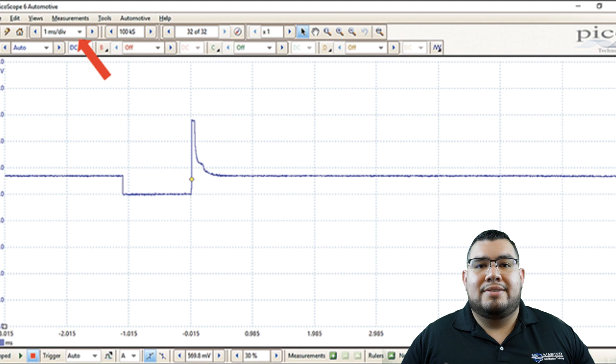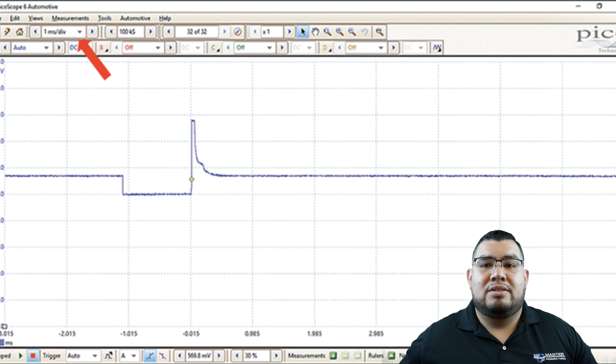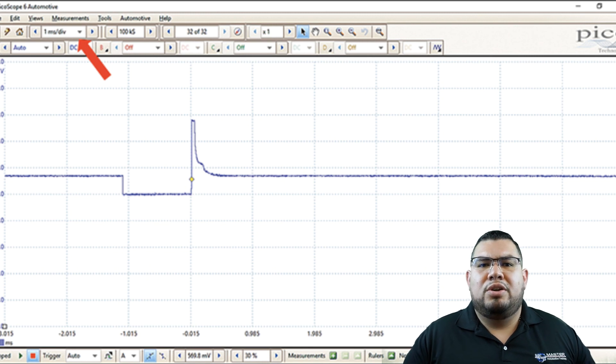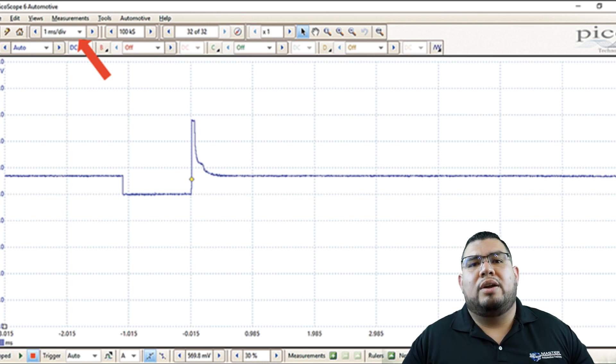The fourth trigger is single. If you're at the shop, you're by yourself, you can't run, you can't start the car and still try to watch the screen, you set it to single. What that's going to do is once you start the car, once the trace is graphed, it stops. It freezes, saves that capture. When you come back, you can go ahead and review that capture so you know exactly what you saw. Single is really good, especially when you're by yourself or if you're just trying to capture one single trace and that's it. Other than that, you're really not going to use it much. The one you're going to use a lot more is the repeat function, which is the one I really like.